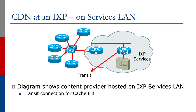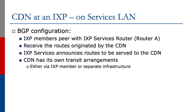The diagram shows an example where the CDN is present as part of the Exchange Point services LAN. The Exchange Point services is gatewayed onto the Exchange Point through router A, and the CDN provides the infrastructure, servers, and probably their own router to connect into the IXP services LAN. The CDN has its own transit connection for cache fill. The BGP configuration here would be that the IXP members peer with the IXP services router — router A in the diagram — and receive the routes originated by the CDN. The IXP services will announce routes to the CDN, and the CDN has its own transit arrangements either via the Exchange Point member or separate infrastructure.